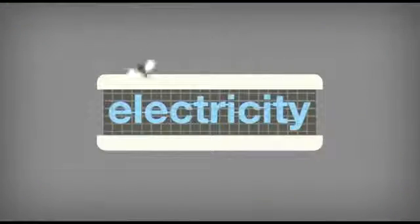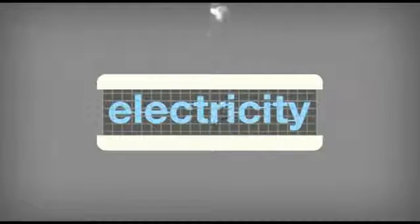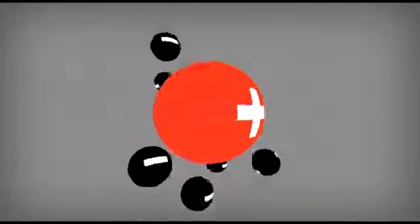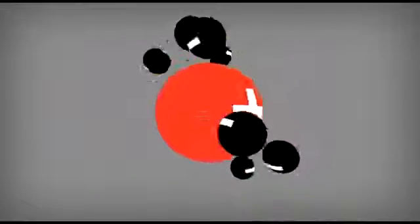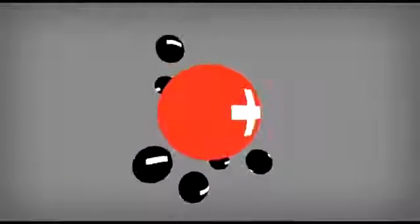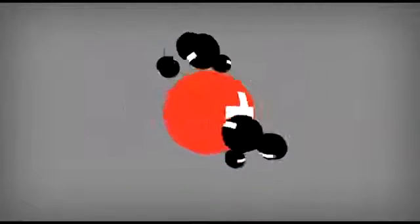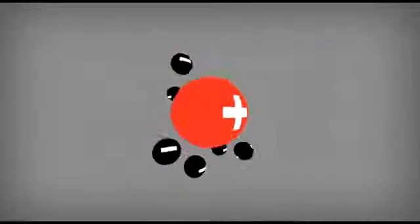How electricity is made. Atoms consist of a positively charged central nucleus and negatively charged electrons, which float around the outside in much the same way as satellites orbit the Earth.